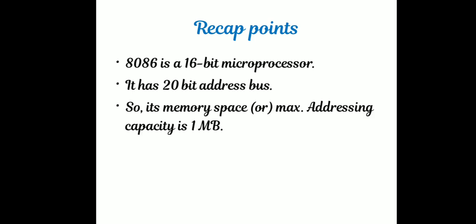With a 20-bit address bus, the memory space is 2 to the power of 20, which is 1 megabyte. The point of memory segmentation is due to the large number of memory locations — 1 megabyte means nearly 10 lakh locations. The microprocessor cannot search all 10 lakh memory locations simultaneously.